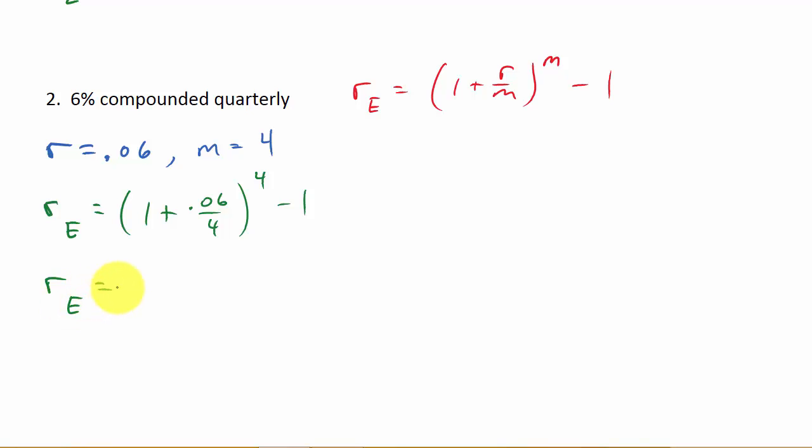R sub E, punch it into your calculator. Just type in 1 plus 0.06 divided by 4 and hit enter. That should give you 1.015. And then hit your exponent button, raised to the 4th. Hit enter. And then minus 1 and hit enter. And that gives you 0.06.